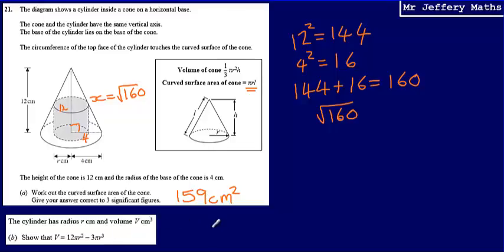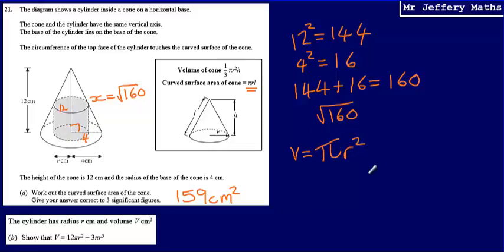In order to do this, let's first think about how we work out the volume of a cylinder. The volume of a cylinder is the area of the base, which is a circle — pi r squared — multiplied by the height.